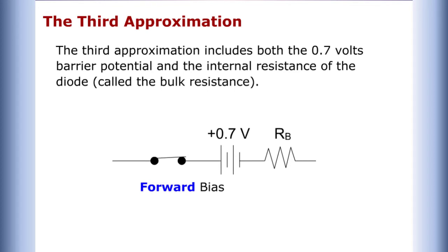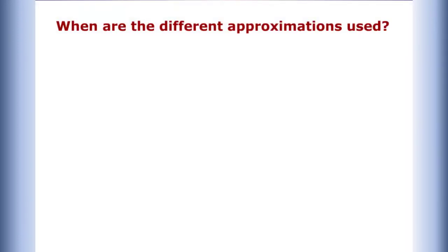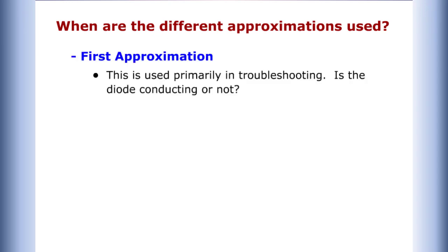The third approximation includes both the 0.7 volts barrier potential and the internal resistance of the diode, called the bulk resistance. Shown here is the reverse bias configuration, and shown here is the forward bias configuration.